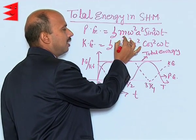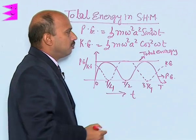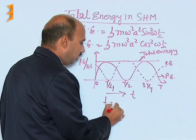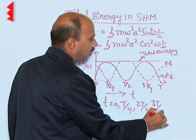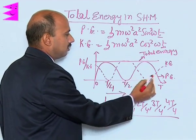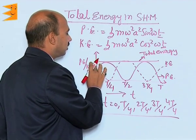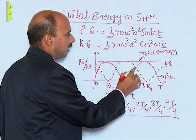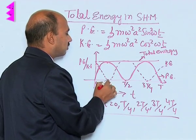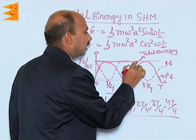Potential energy is given by ½mω²A² sin²ωt and kinetic energy is ½mω²A² cos²ωt. So potential and kinetic energy are functions of time. By putting different values of time — t = 0, T/4, 2T/4, 3T/4, and 4T/4 — we can plot the graph. The dotted line represents kinetic energy and the solid line represents potential energy. When potential energy is 0, kinetic energy is maximum, and when kinetic energy is 0, potential energy is maximum. But total energy remains constant, shown as a straight horizontal line.